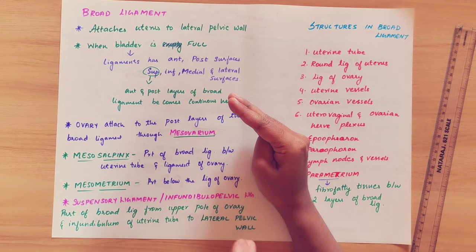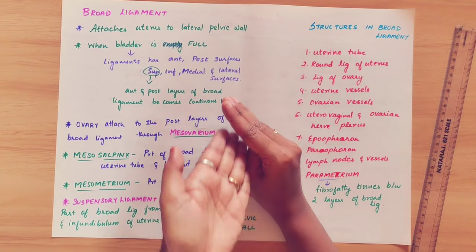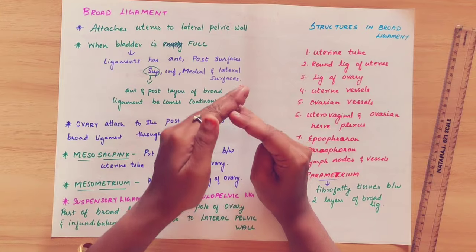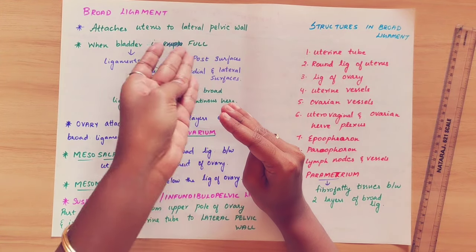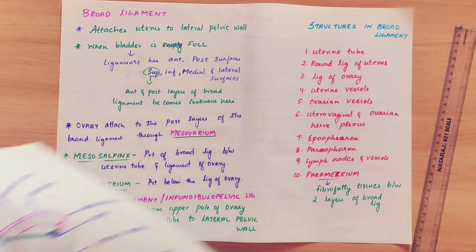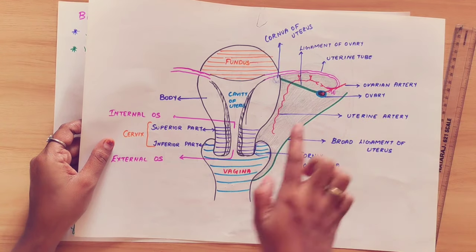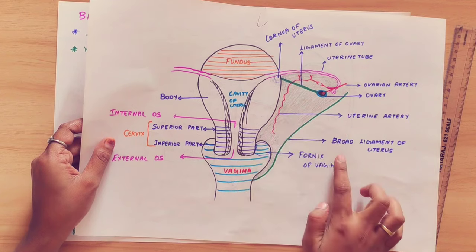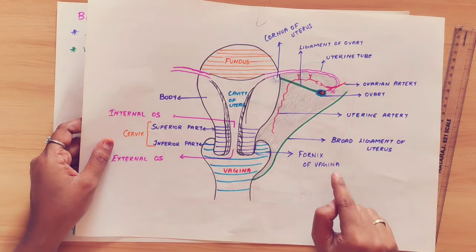The broad ligament has two layers — anterior and posterior. It attaches the uterus to the lateral pelvic wall. The anterior and posterior layers are continuous with each other, forming a wing-like structure along the sides of the uterus. These two layers become continuous at the superior border of the broad ligament.